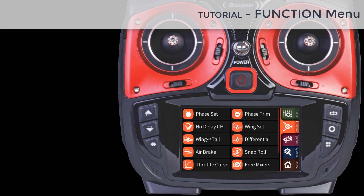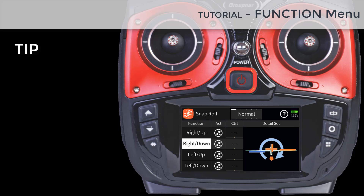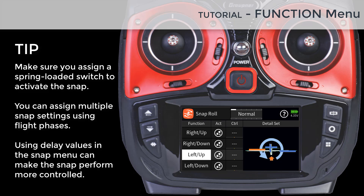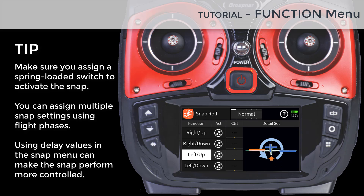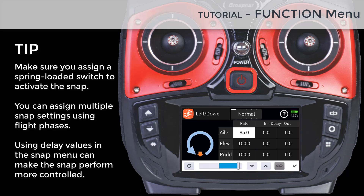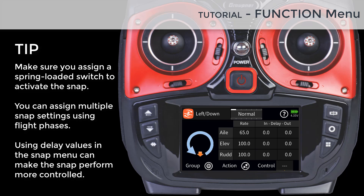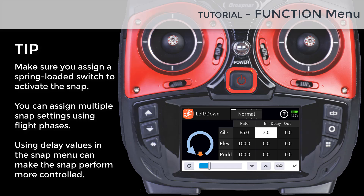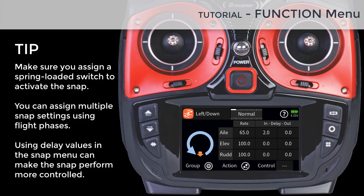The snap roll menu lets you preset four different snap rolls that are activated during flight with a switch. To select the type of snap, tap on any of the function buttons and watch the icon detail to confirm the type of snap you want. Tap on the icon to view the snap detail menu, where you will set the desired rates as well as delay for each control surface to make the snap perform smoother. Snap rolls are phase dependent, so you can experiment with different settings to eventually make a snap look as good as possible.